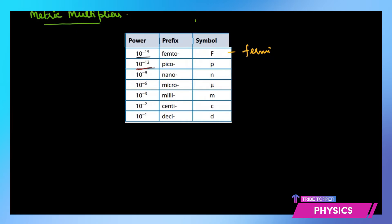Nano can be used for nanometers, nano coulombs, anything. That will be 10 raised by minus 9. Then is micro which is 10 raised by minus 6. Then we have milli which is 10 raised by minus 3, centi which is 10 to the power negative 2, and deci which is 10 to the power negative 1.